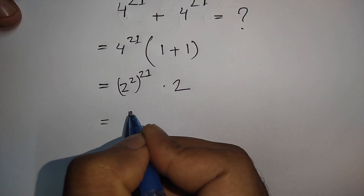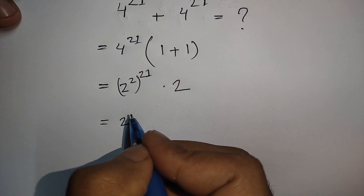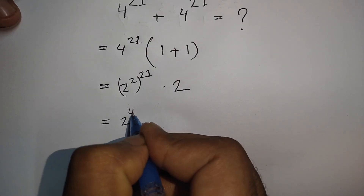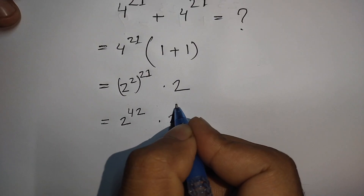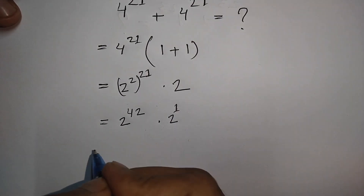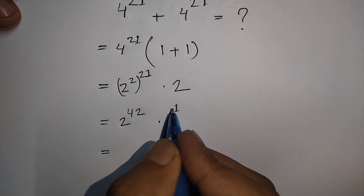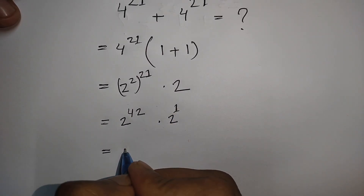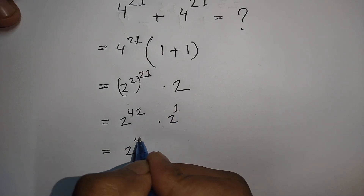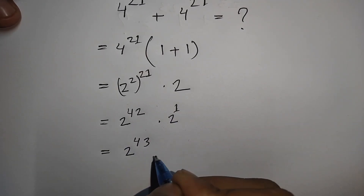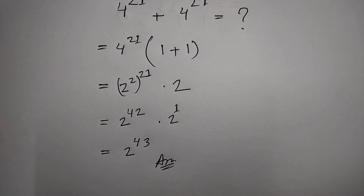Now 4 to the power 21 is 2 squared to the power 21, which is 2 to the power 42. Multiplied by 2 to the power 1, and since they have the same base, we add the exponents: 42 plus 1 equals 43. So the correct answer is 2 to the power 43.